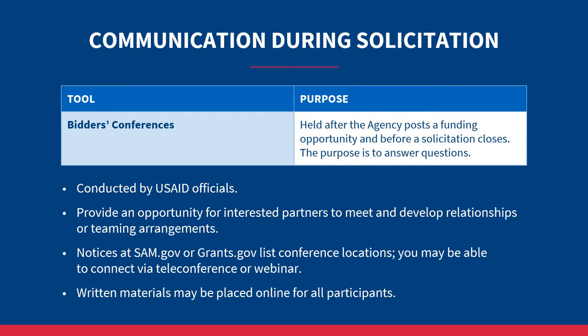Although not common, USAID may decide to hold additional conferences called bidders conferences at any time during the solicitation stage of the award process. These conferences are held after the agency posts a funding opportunity and before the solicitation closes, for the purpose of answering questions from interested partners. These events also provide an opportunity for interested partners to meet and develop teaming arrangements. Notices at beta.sam.gov or grants.gov list conference locations. If you are unable to attend in person, you may be able to connect via teleconference or webinar, and written materials including Q&A documents may be placed online.